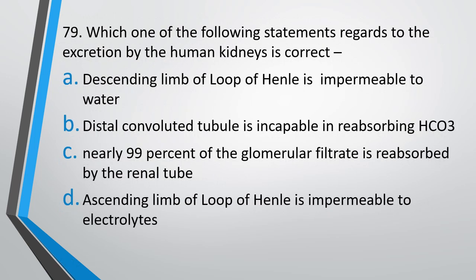Question number 79: Which one of the following statements regarding excretion by the human kidney is correct? Option: the descending limb of the loop of Henle is impermeable to water; the distal convoluted tubule is capable of reabsorbing bicarbonate ions; nearly 99% of GFR is reabsorbed by the renal tubules.